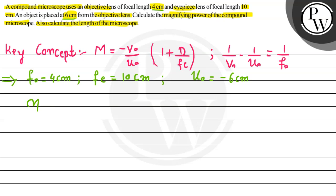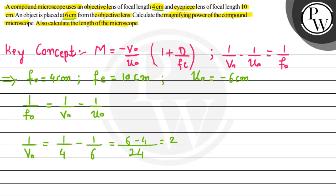Before applying the magnification power formula, we need to find v-naught, the image distance from the objective lens, using the lens formula. We know 1 by f-naught equals 1 by v-naught minus 1 by u-naught. Substituting: 1 by v-naught equals 1 by 4 minus 1 by minus 6, giving LCM of 24: (6 minus 4) by 24 equals 2 by 24 equals 1 by 12. So v-naught equals 12 cm.